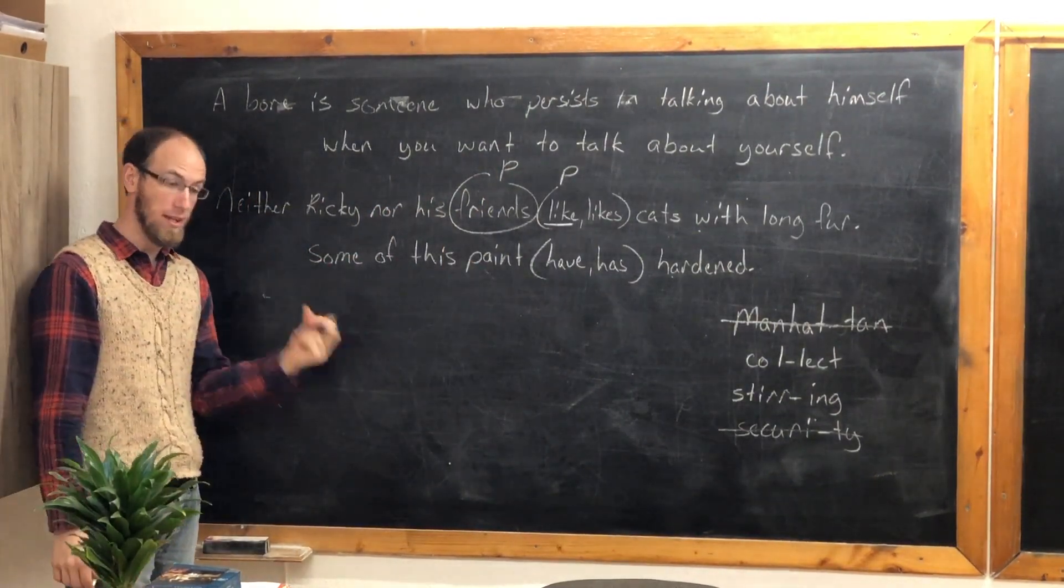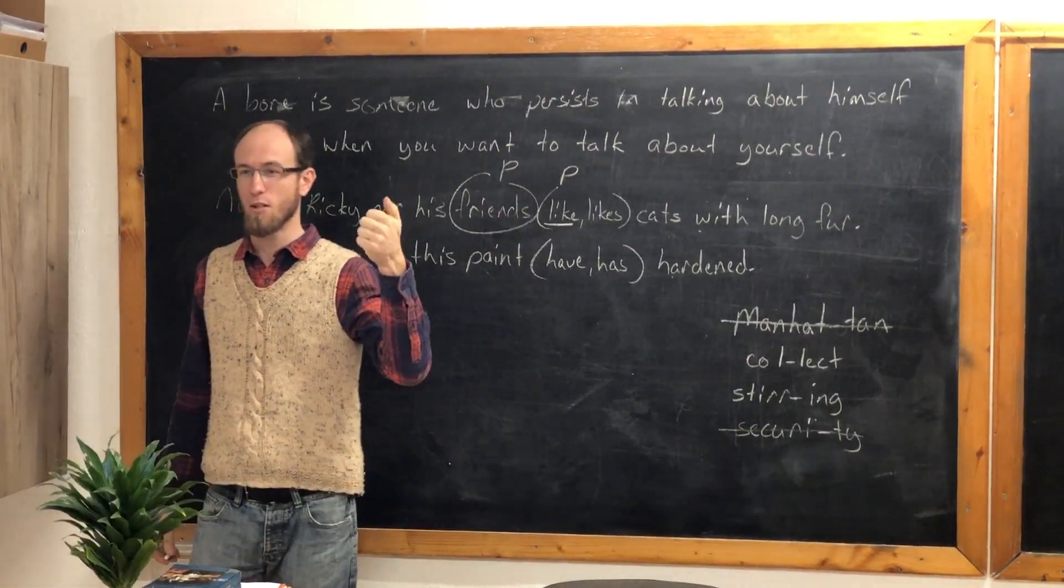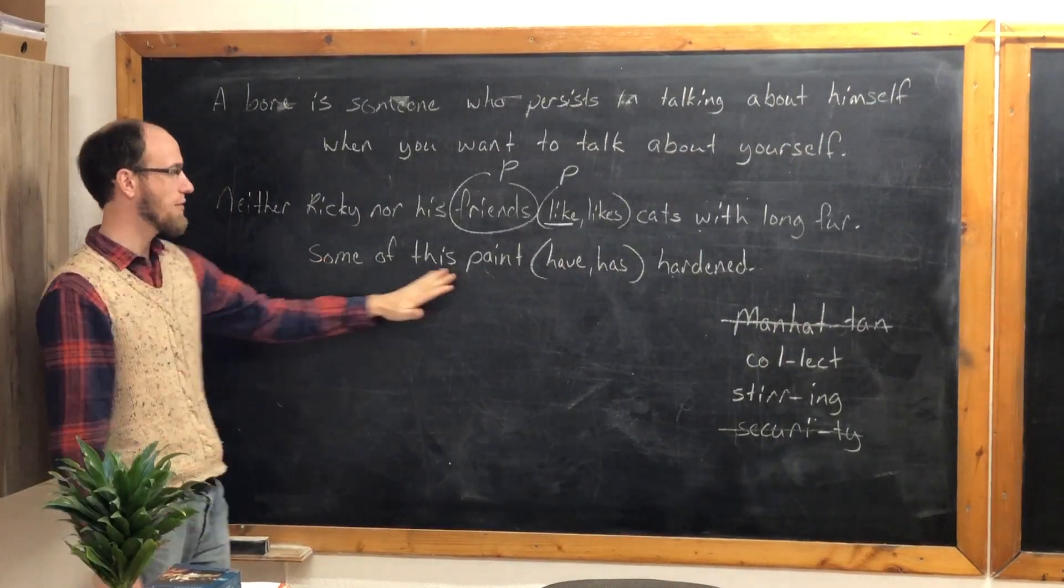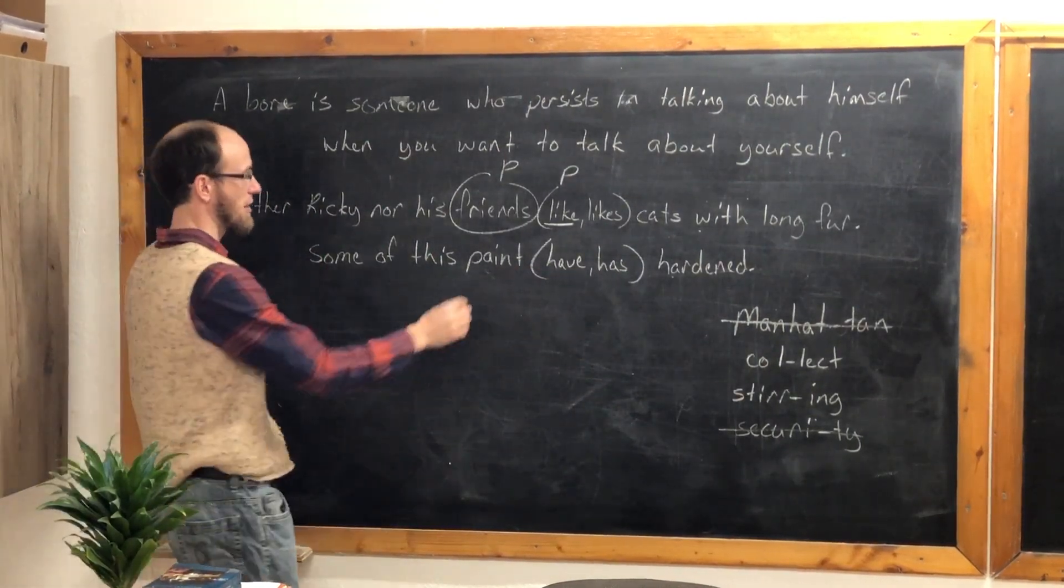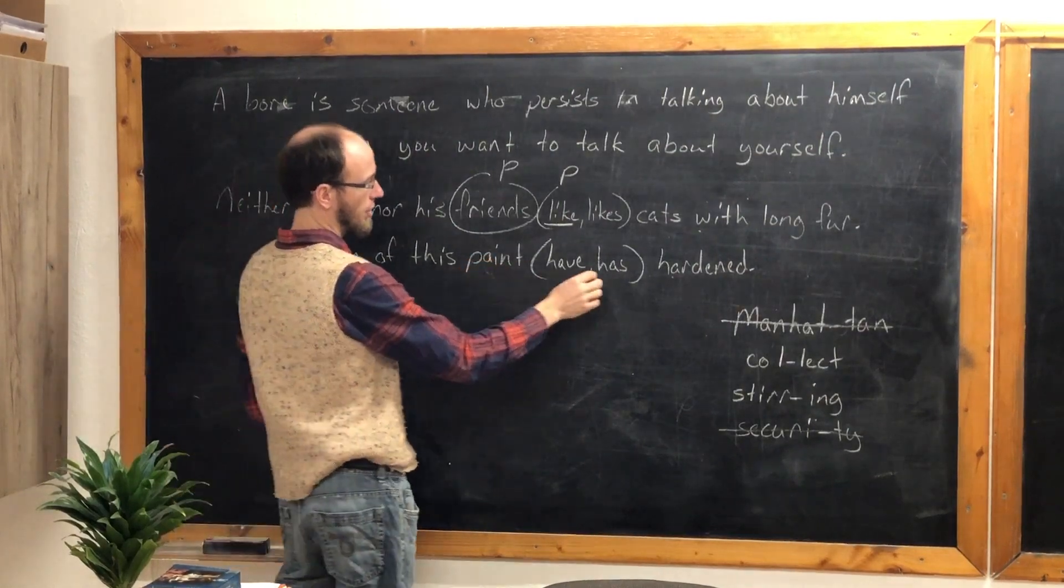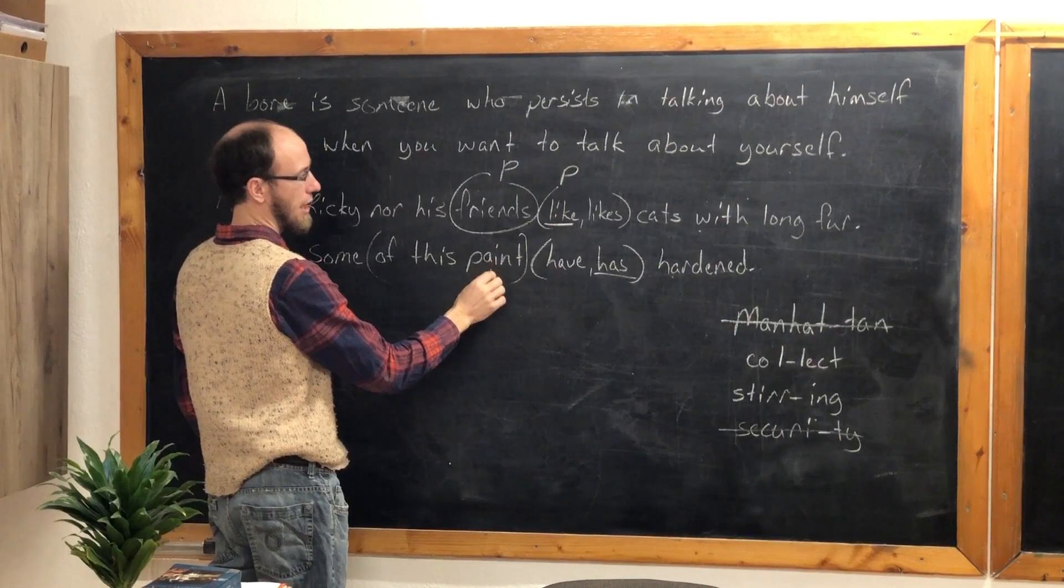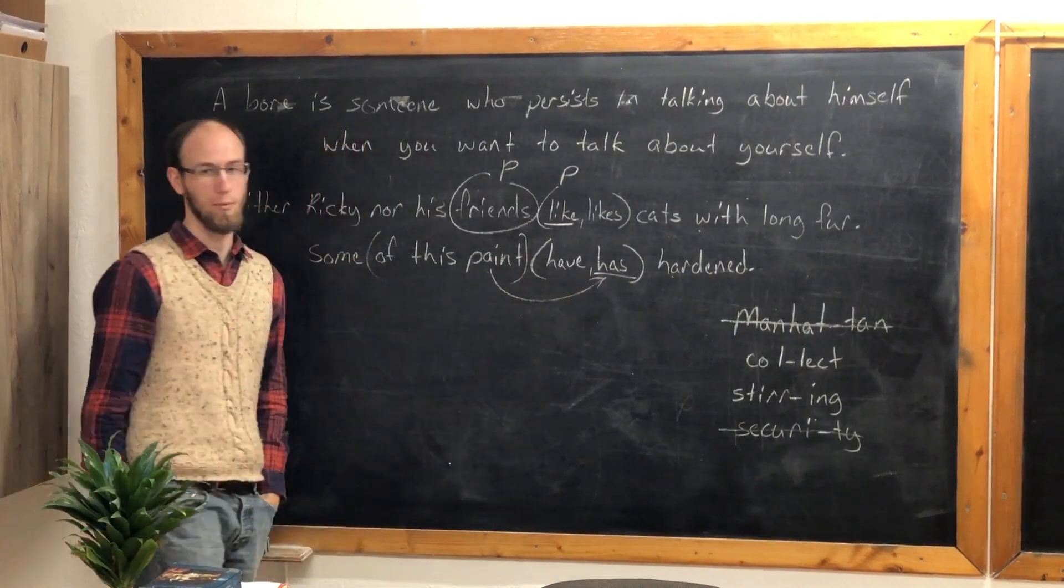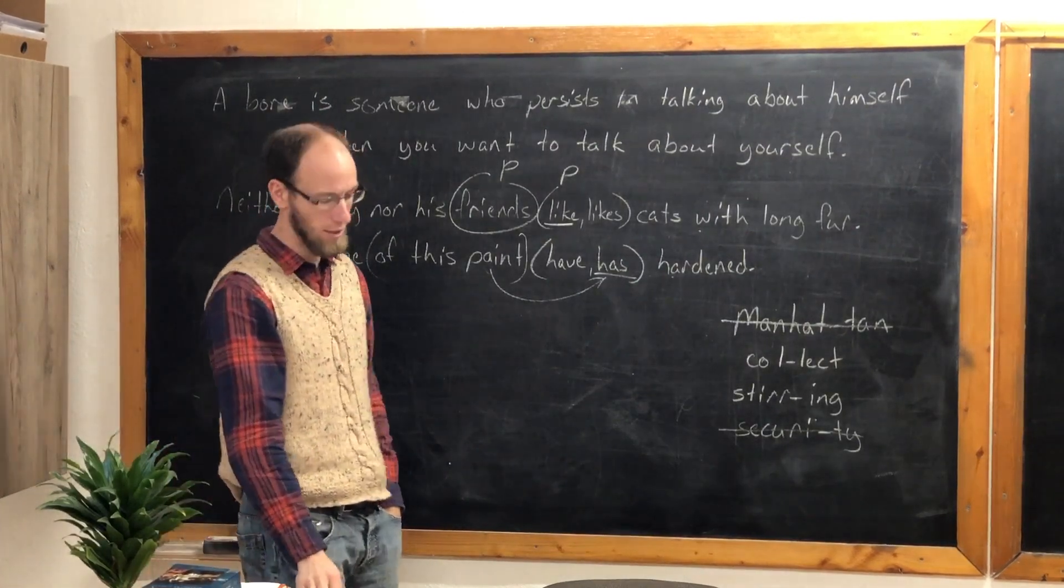And then with indefinite pronouns that can be singular or plural. Which are, what are they? Some, any, almost. Some, any, not almost. Some of this paint have or has hardened. Has. Has. Because we'll go with paint. Paint comes right before it. Has hardened. Even though it's in a prepositional phrase, we still look at it to make subject-verb agreement. Singular. Singular. Some of the paint has hardened.